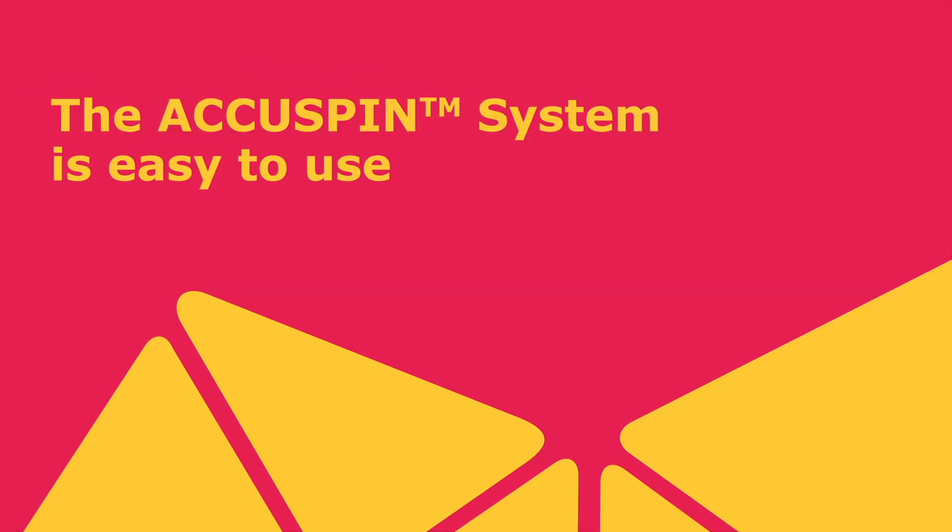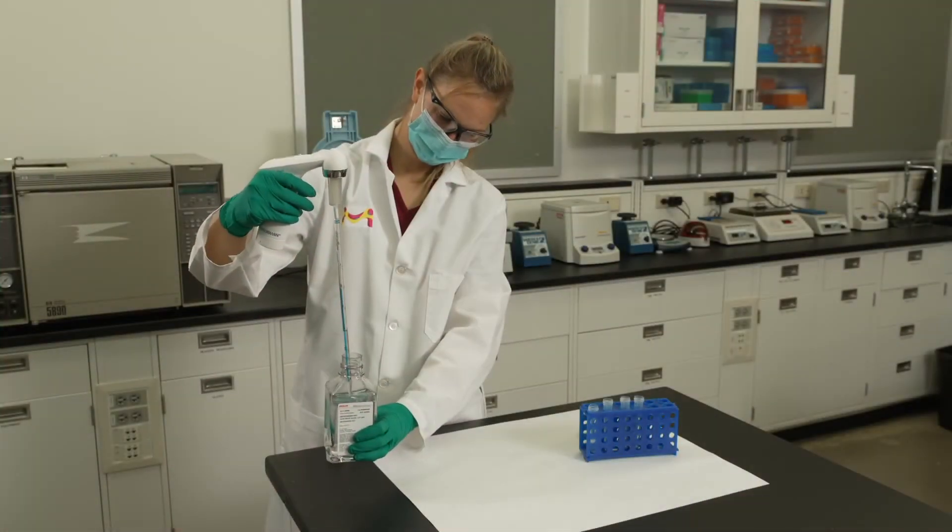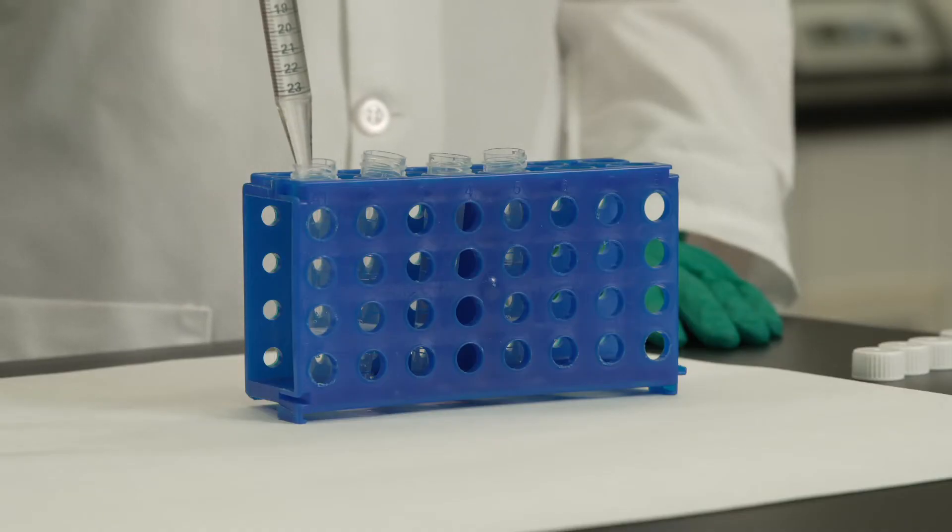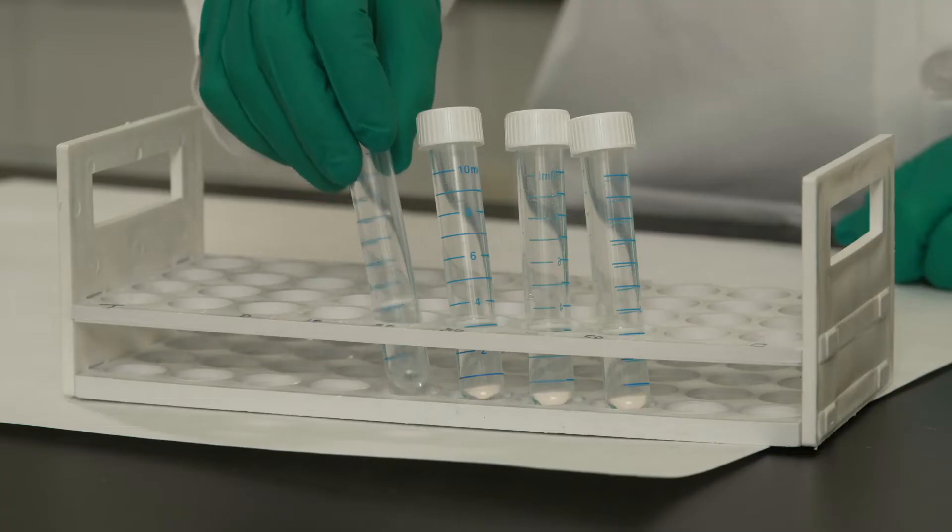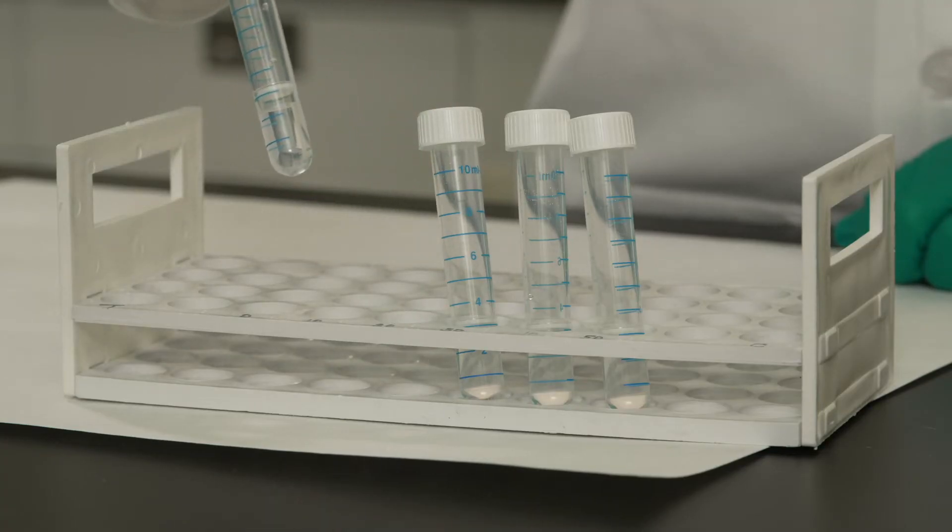While proper precautions must always be followed, the AccuSpin system is easy to use. First, after bringing the histo-opaque to room temperature, pipet three milliliters of histo-opaque into the upper chamber of each AccuSpin tube. If you buy the AccuSpin histo-opaque system, your tubes arrive pre-filled.